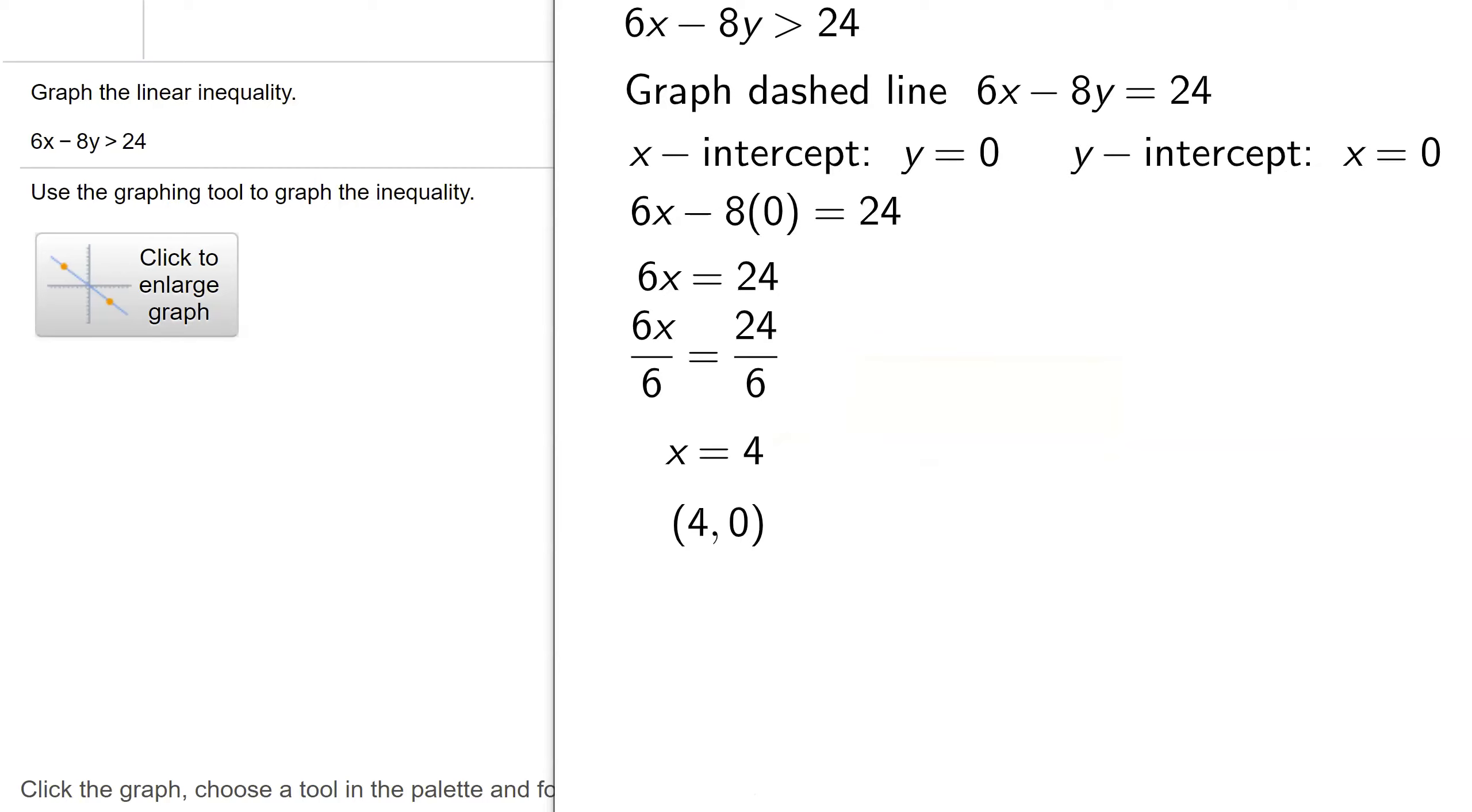Now to find the y-intercept, we set x equals 0 in this equation. So I get 6 times 0 minus 8y equals 24. Well, 6 times 0 is 0, so negative 8y equals 24, divide both sides by negative 8, and we get y equals negative 3. So my y-intercept is (0, -3).